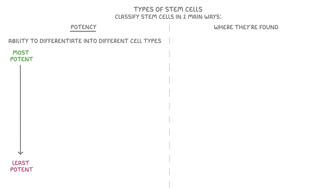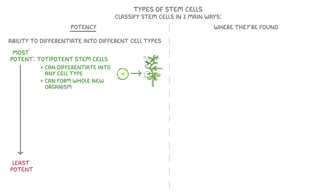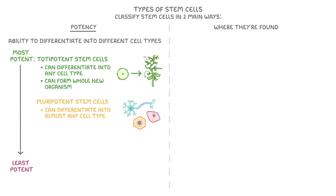The most potent stem cells are called totipotent stem cells, which can differentiate into any cell type and can even form a whole new organism. The next most potent are pluripotent stem cells, and these are able to differentiate into almost any type of cell, although they can't form a whole new organism.